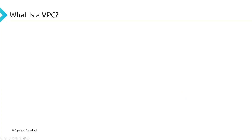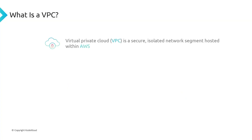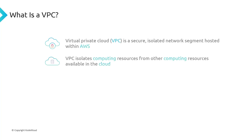So let's dive into VPCs. A virtual private cloud is a secure isolated network segment hosted within AWS. The whole purpose of the VPC is to isolate resources from other resources — specifically, to isolate our resources from other customers' resources. The great part about VPCs is that they give the customer full control of networking within the cloud.